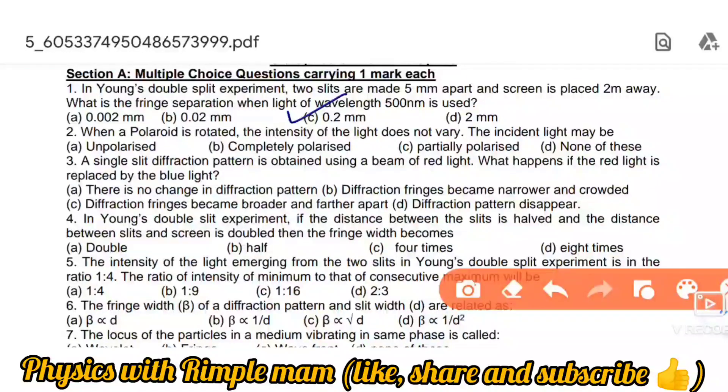Next question: When a polarizer is rotated, the intensity of light does not vary. But if the intensity of light does change, then it changes partially. So option C: partially polarized.